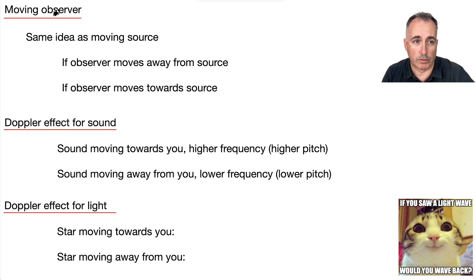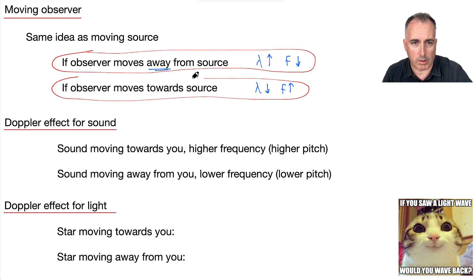Let's consider the moving observer. Like, if you saw a light wave, would you wave back? If the observer is the one moving, it's the same kind of idea. If the observer moves away from the source, the wavelength will get bigger, which means the frequency will get smaller. And it's the opposite. If the observer moves towards the source, then those waves will be squished. So wavelength goes smaller, and the frequency gets larger. Those are your two different cases.